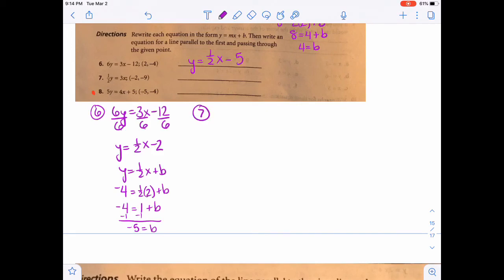We'll do one more of those together. In number 7, it's a 1 half y equals 3x. So we actually need to multiply by the reciprocal. So we'll multiply by 2 over 1 on both sides. So that's going to give us y equals, and then 3x times 2 is 6x. So this time, we don't even have a plus anything in our original. But that doesn't mean we won't have a plus something for our parallel line.